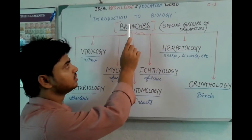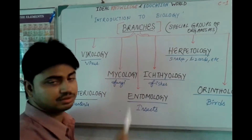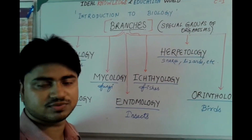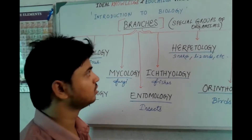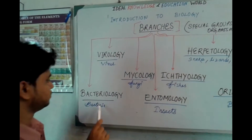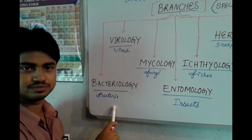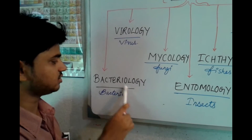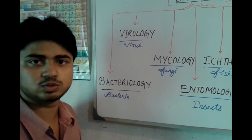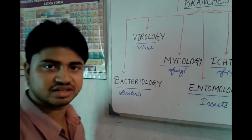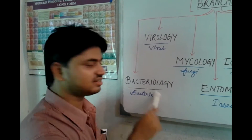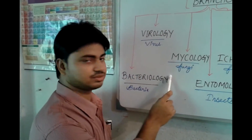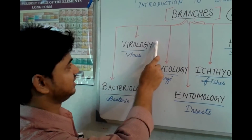We are going to read the branches of biology related to special groups of organisms. The first is bacteriology — the study related to bacteria, including the occurrence and characteristics of bacteria. All studies related to bacteria fall under bacteriology.